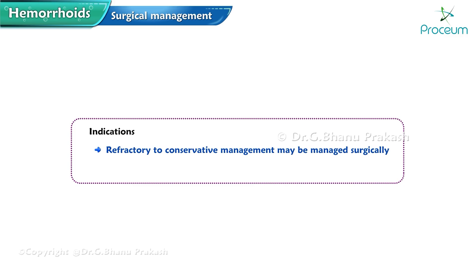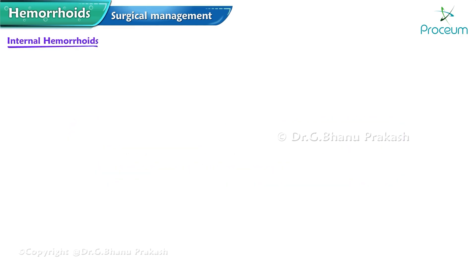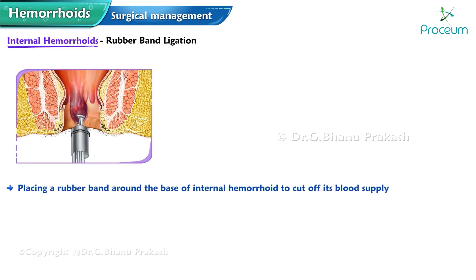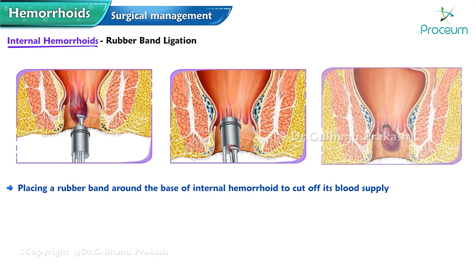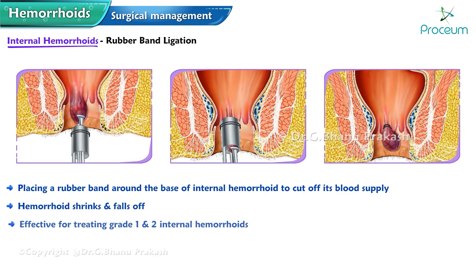Hemorrhoids refractory to conservative management may be managed surgically. Indications for surgery also include thrombosed or necrotic external hemorrhoids. For internal hemorrhoids, rubber band ligation involves placing a rubber band around the base of the internal hemorrhoid to cut off its blood supply; over time the hemorrhoid shrinks and falls off. This is effective for grade 1 and some grade 2 internal hemorrhoids.